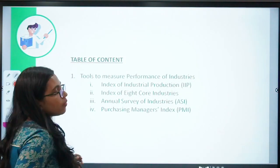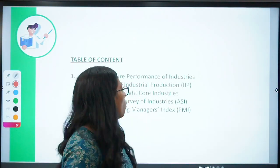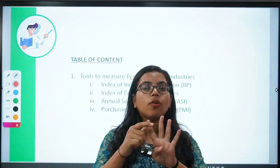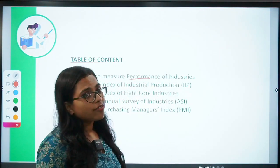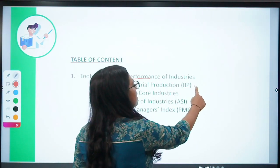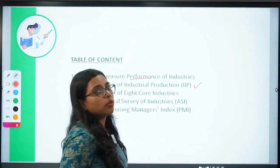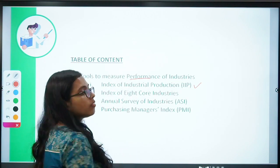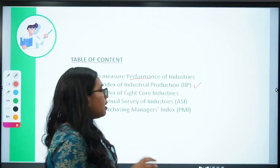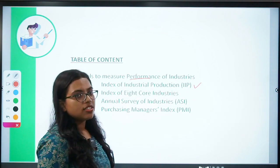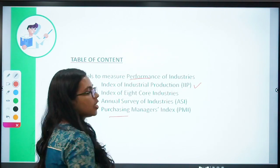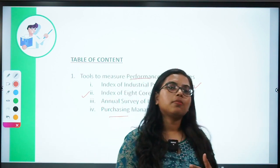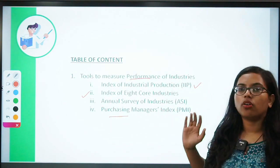So what are the various tools required to measure the performance of industries? There are four major tools. The first, as I have already mentioned, is the Index of Industrial Production — IIP. The second is the Index of Eight Core Industries. Third is the Annual Survey of Industries. And finally, we have the Purchasing Managers Index.